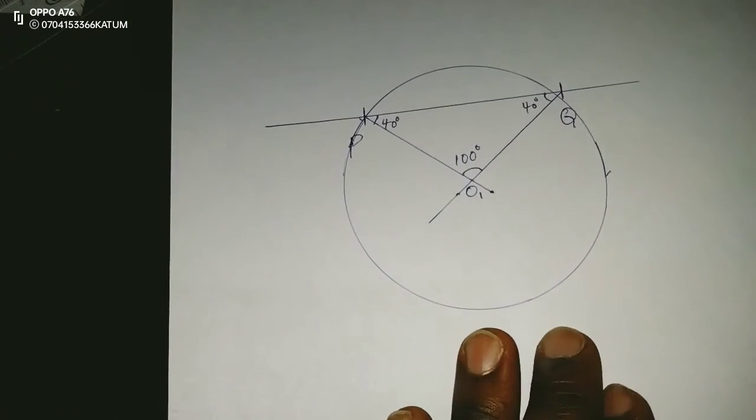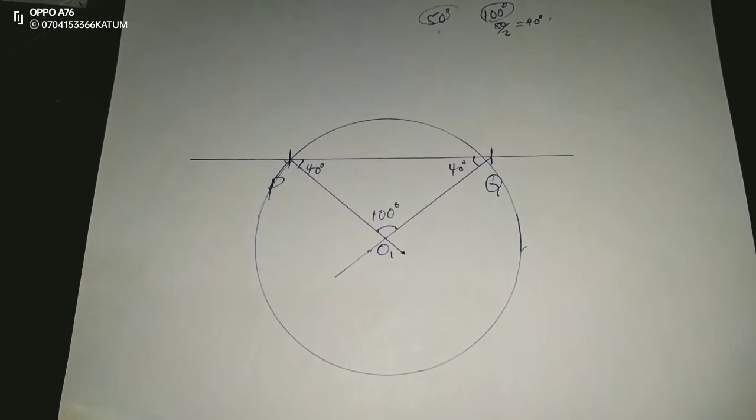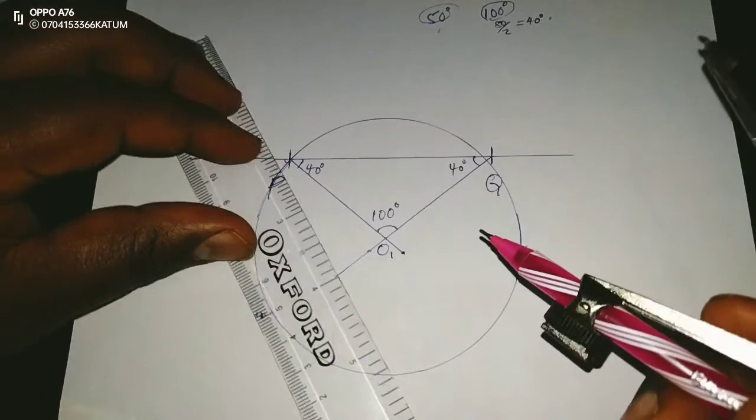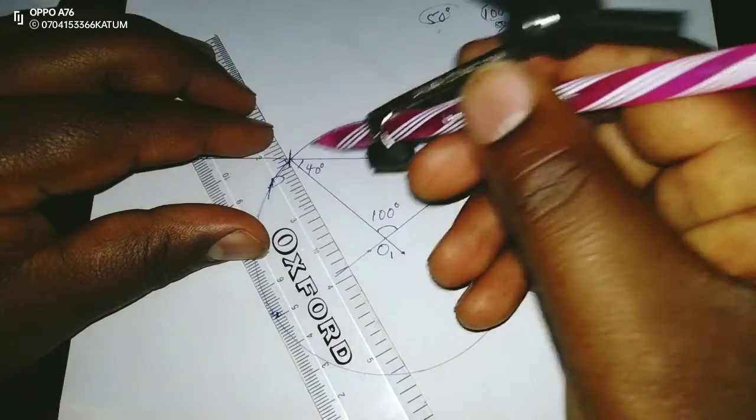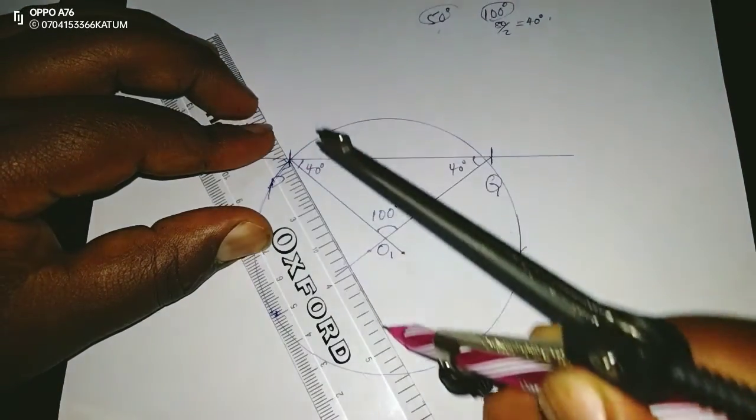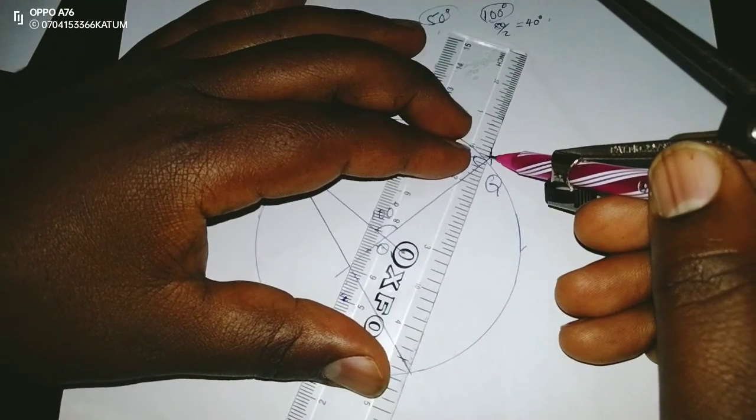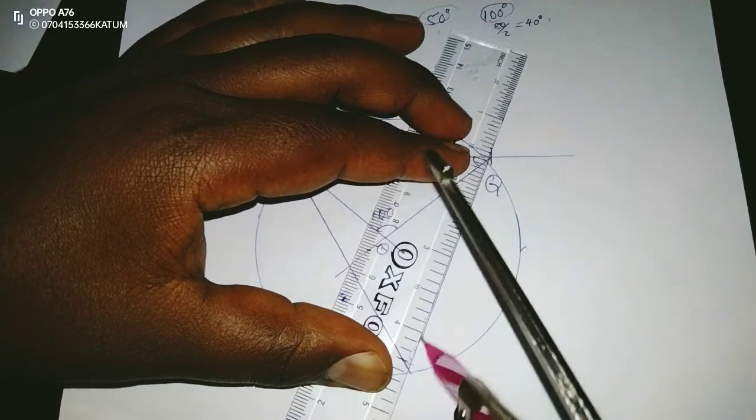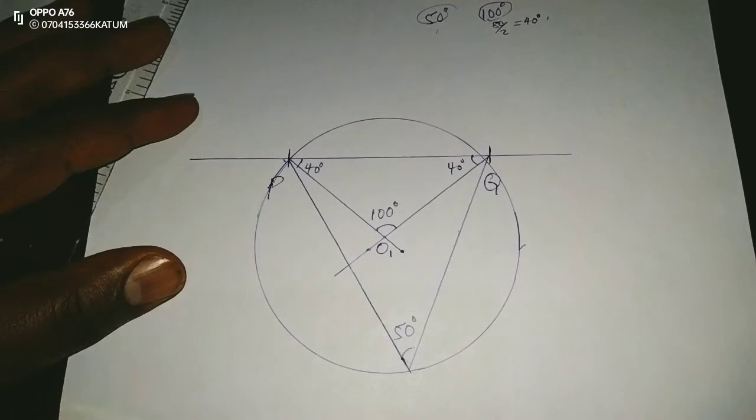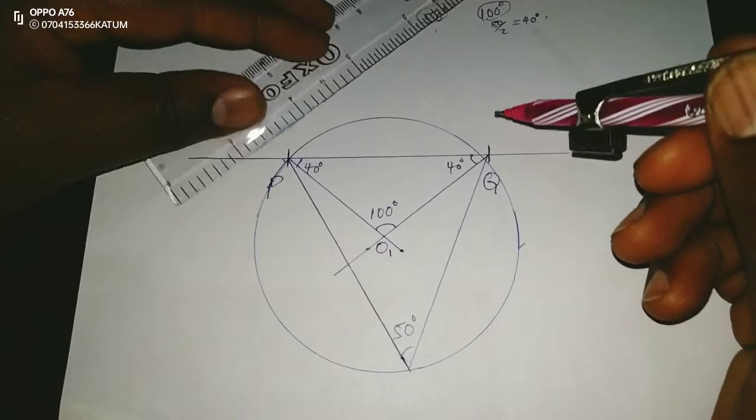Now with our circle here, this is an indication that with 100 degrees at the center, using PQ as a chord, we can subtend 50 degrees at the circumference. So at the circumference we have 50 degrees because at the center we are having 100, which means on the major arc of this circle we can subtend 50 degrees.